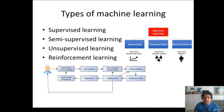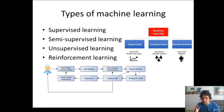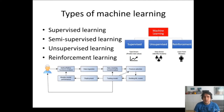There are usually three kinds of machine learning, though semi-supervised learning can be considered a fourth kind. The main kinds are supervised, unsupervised, and reinforcement learning.